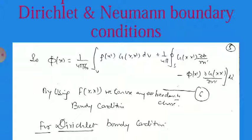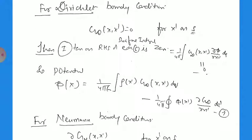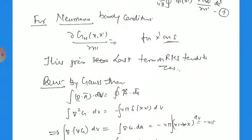Using F(x, x') we have freedom to choose boundary conditions. For Dirichlet boundary conditions, we set G_D(x, x') equals zero for x' on the surface, so the first surface integral term vanishes. The potential is then phi(x) equals 1 over 4 pi epsilon naught times the volume integral of rho G_D dV minus 1 over 4 pi times the surface integral of phi del G_D by del n' dA. For Neumann boundary conditions, del G_N by del n' equals zero on the boundary surface.